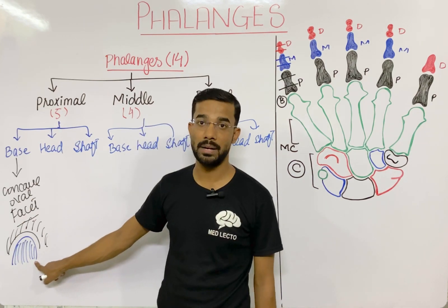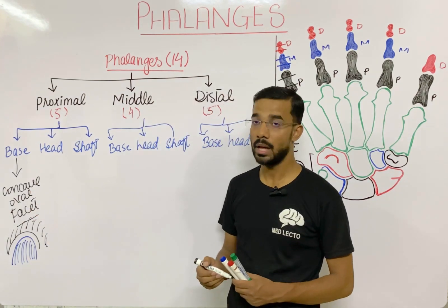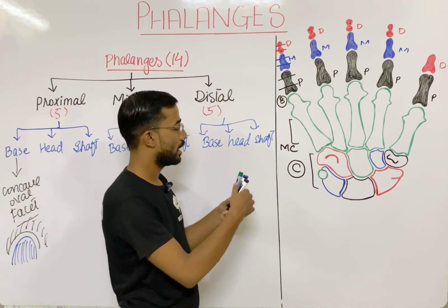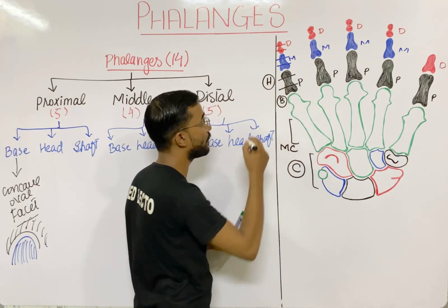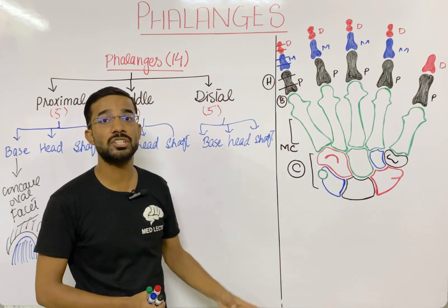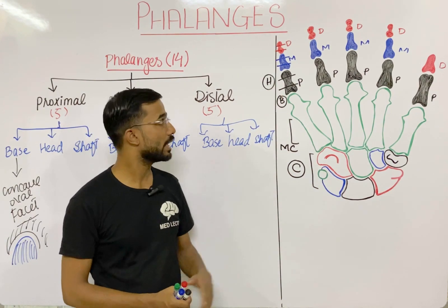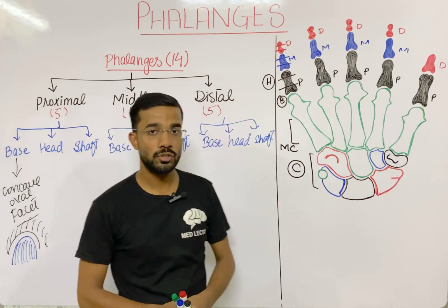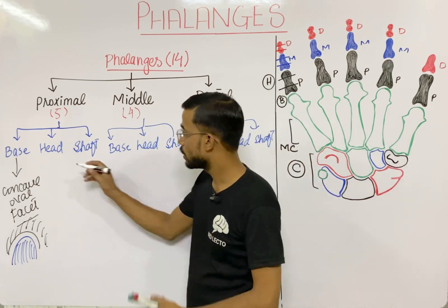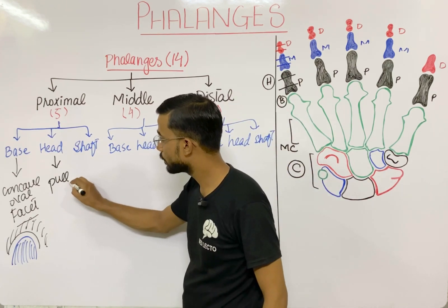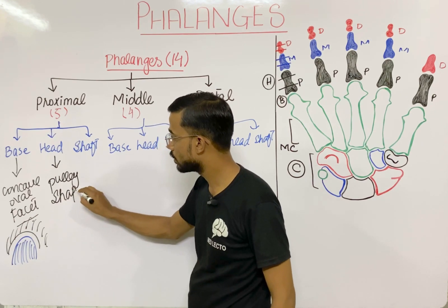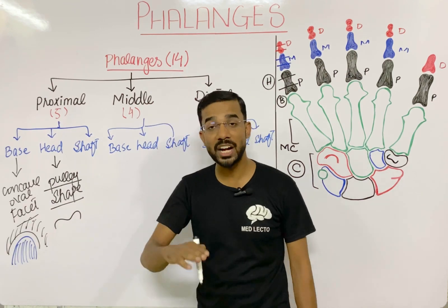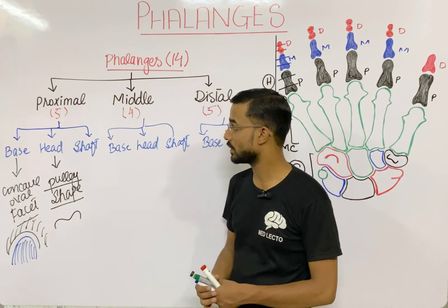The head of the proximal phalanges is trochlear shape — also called pulley shape. This pulley-shaped head actually articulates with the middle phalanges. That is the most important thing about the head of the proximal phalanges.